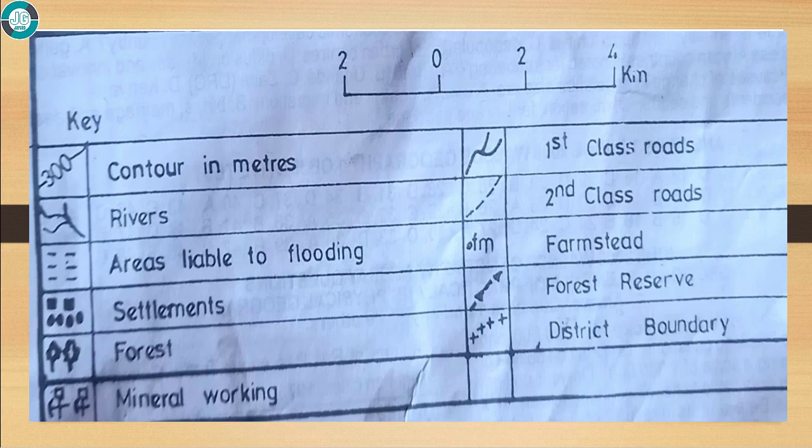This is the key. We have the contours, the rivers, areas liable to flooding, settlements, forests, mineral working, first class routes, second class routes, farmstead, forest reserve, and district boundaries.